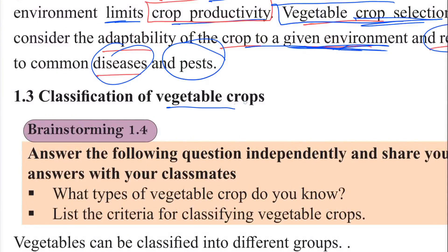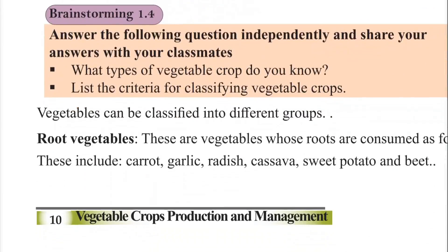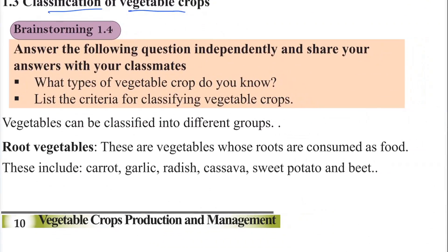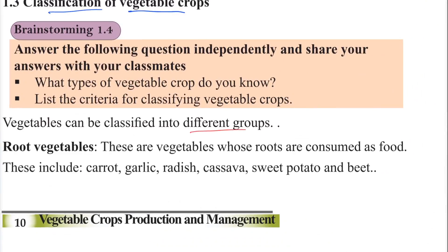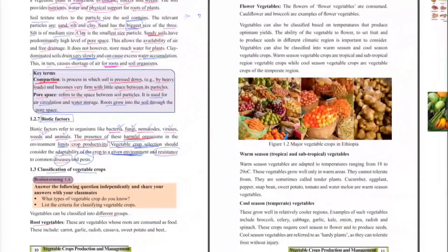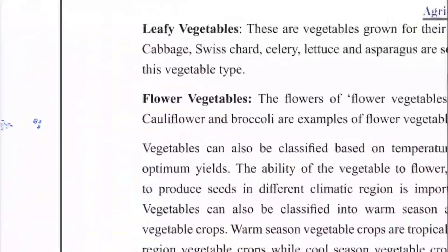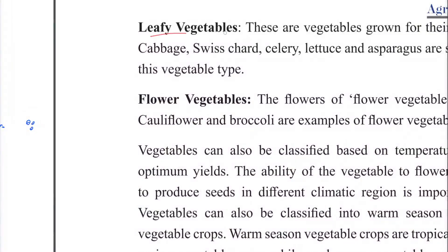Classification of Vegetable Crops. Vegetables can be classified into different groups. The main groups include root vegetables, leafy vegetables, and flower vegetables.